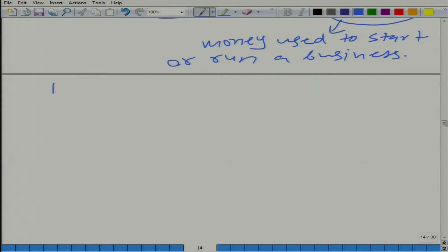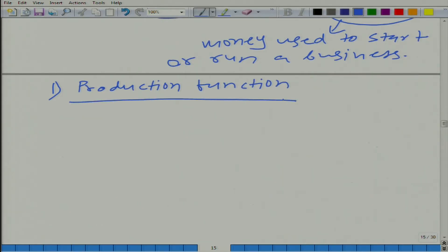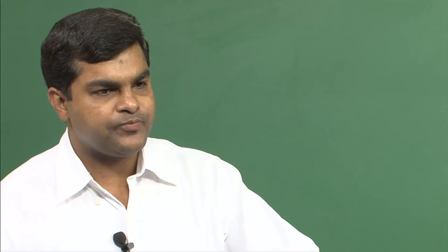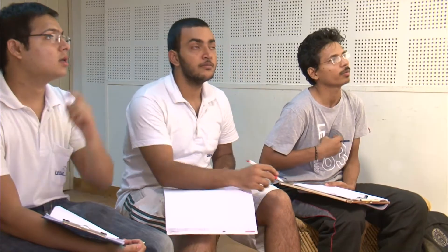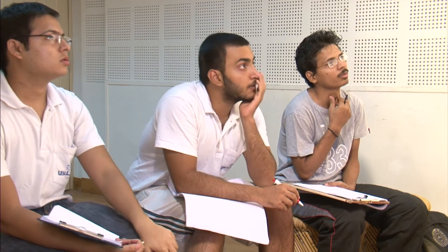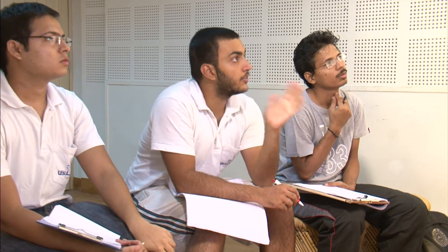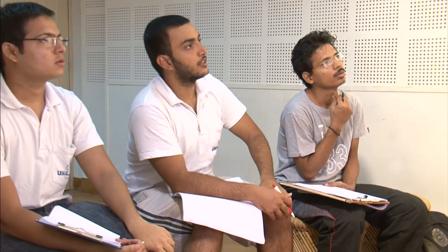One of the simplest ways to describe it is to use something called the production function. What is the production function? A function that gives the maximum possible output given a set of inputs — that is one definition.